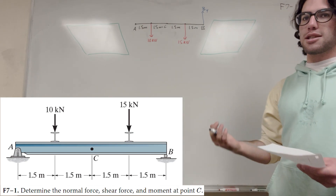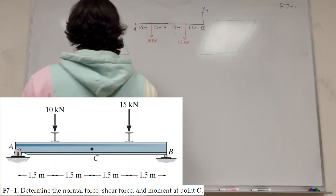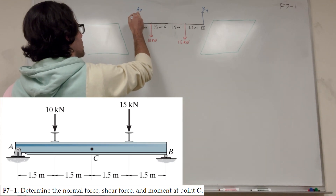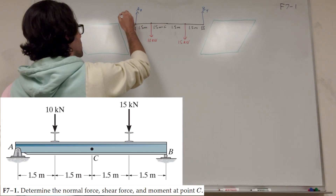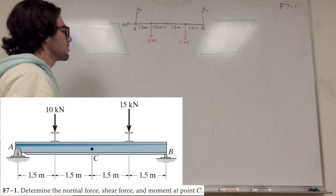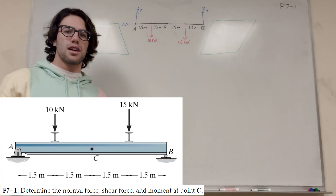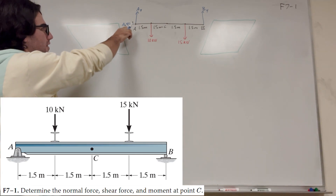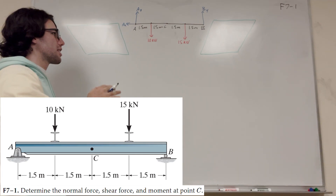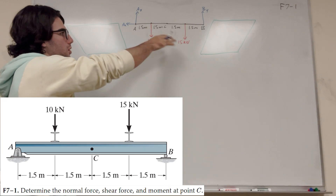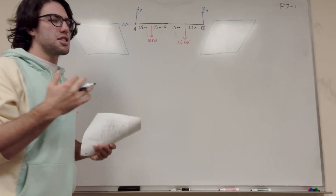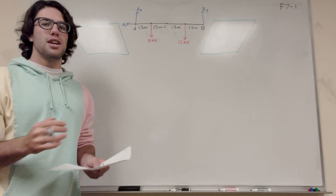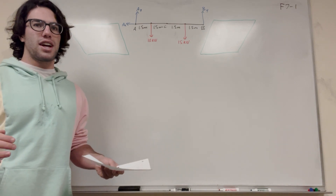A is a pin, so A has a force in the x and the y direction — A_y and A_x. We can assume A_x is zero because there are no horizontal forces. If you take the sum of forces in the x direction, it's just A_x = 0, which proves A_x equals zero.